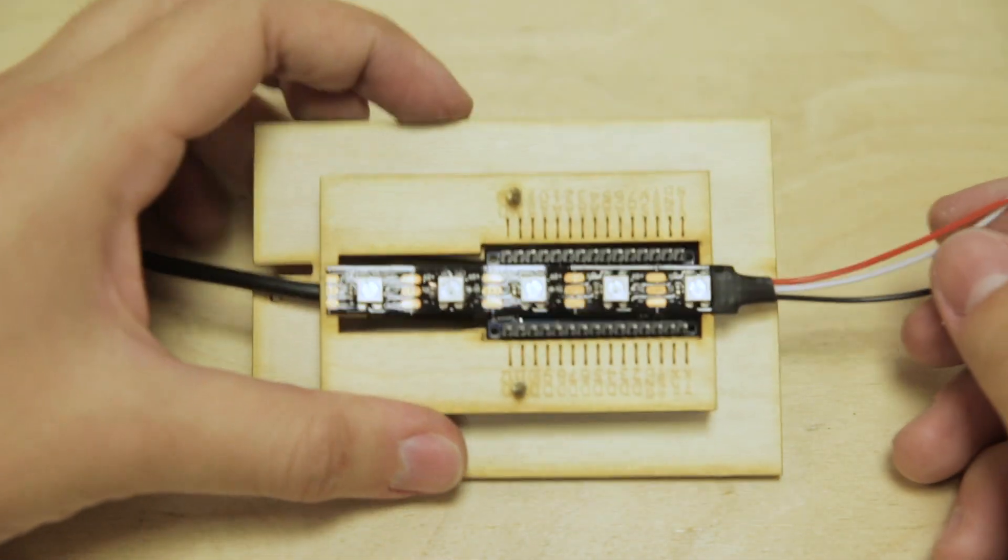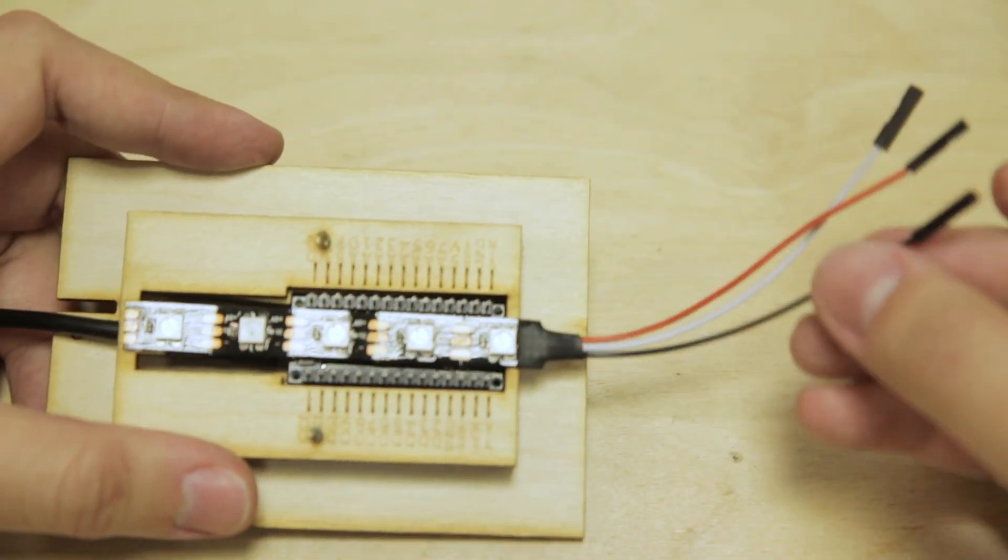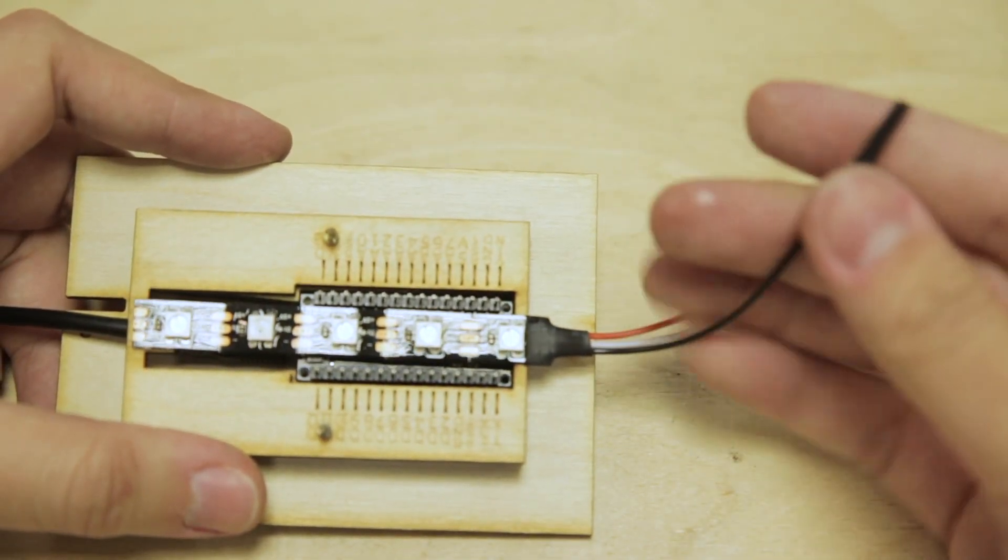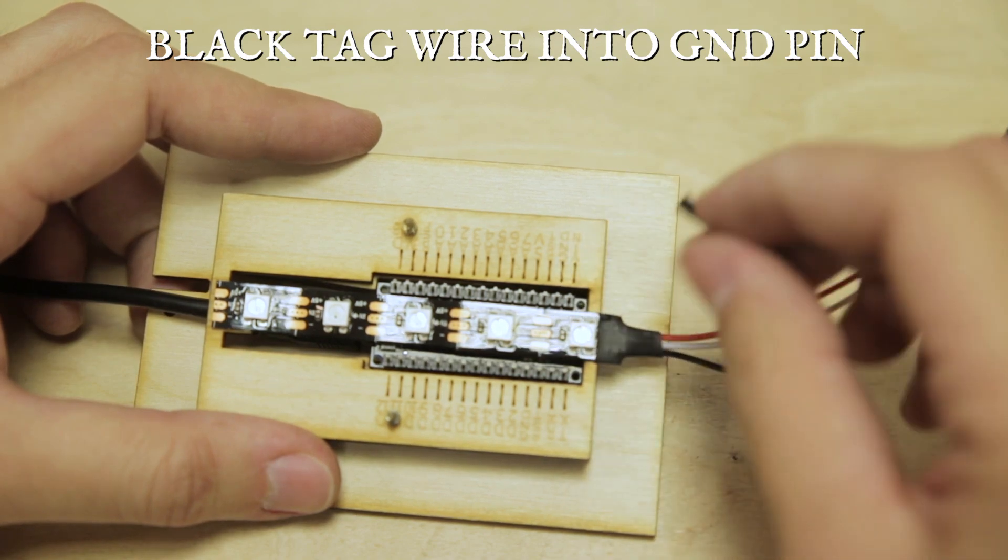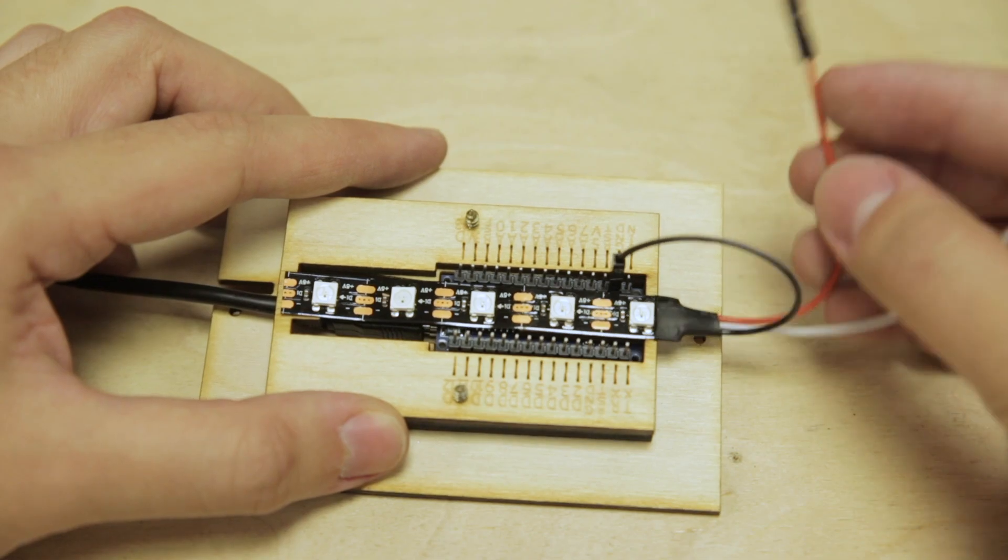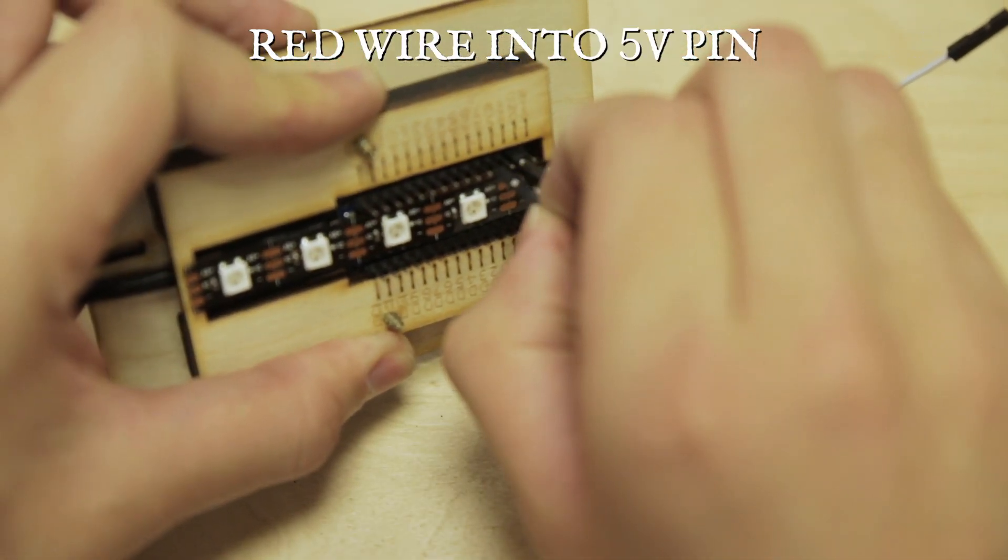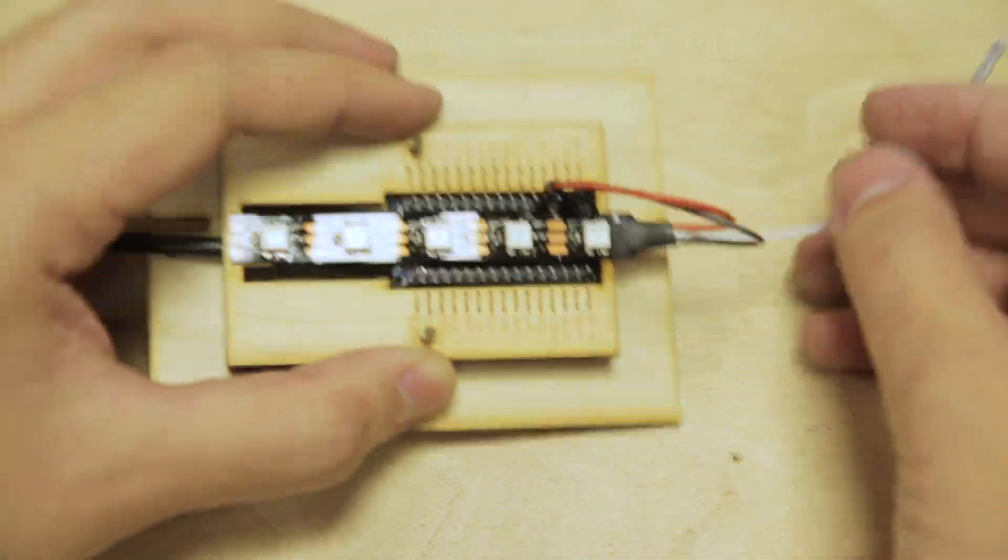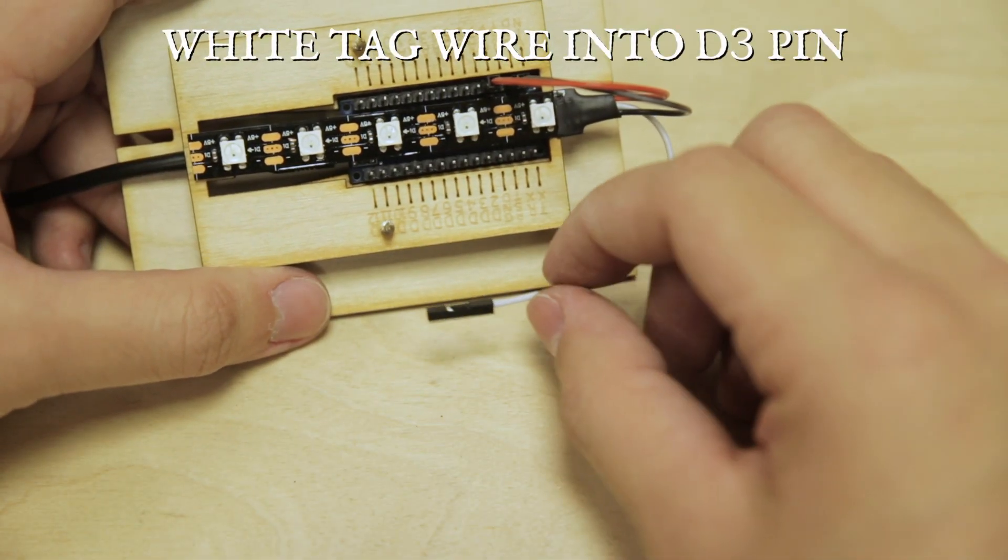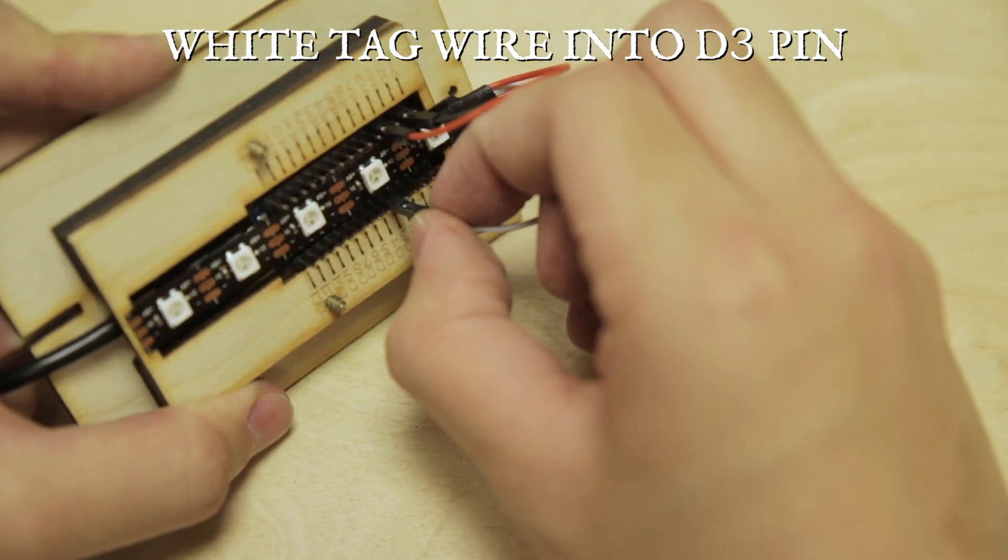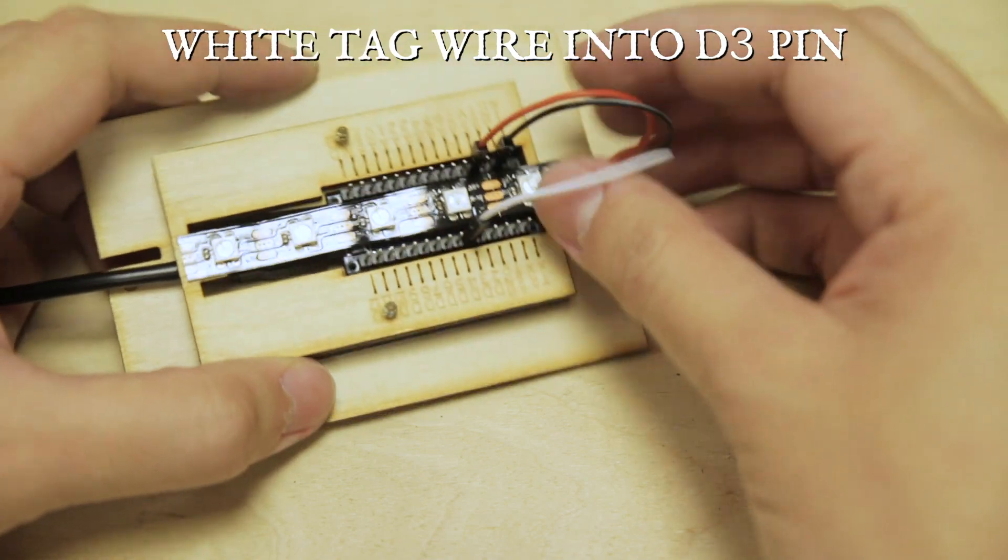Now that it's dried, we're going to plug these wires into the controller. First, start with the wire with the black tag at the end. This goes into the pin marked GND or ground. Next, take the red wire and plug that into the pin marked 5V. That's 5 volts and will supply power to the lights. Finally, take the wire with the white tag. This wire will transmit instructions from the controller to the light strip and we'll plug that into the pin marked D3.